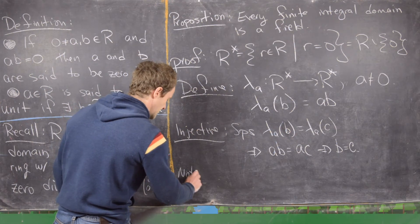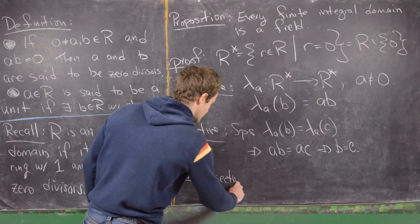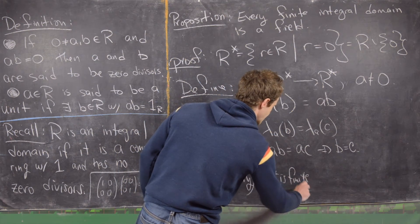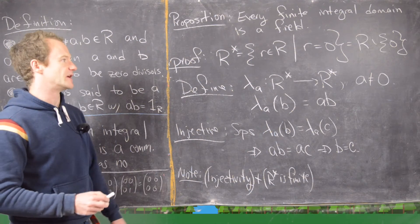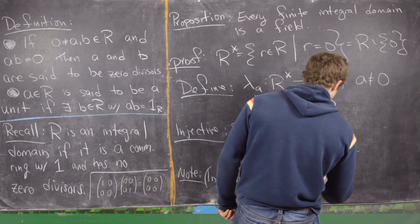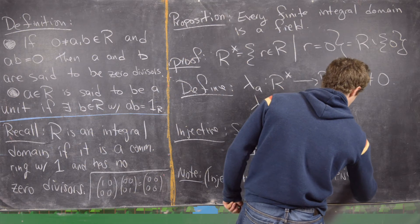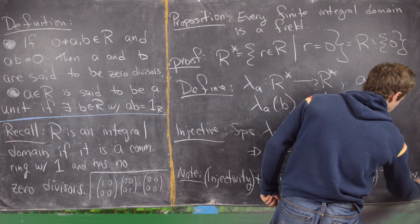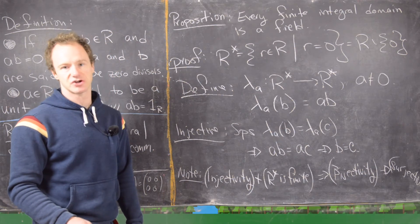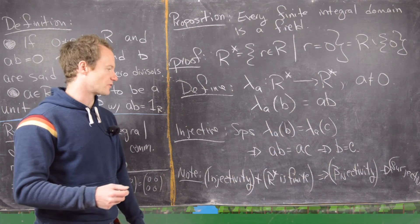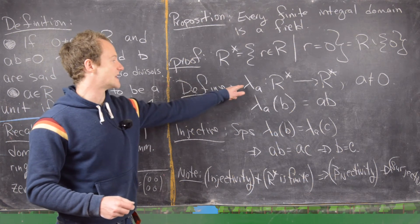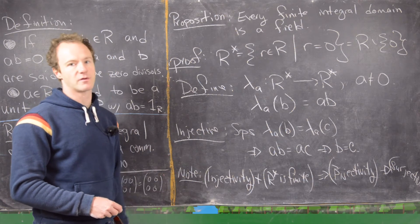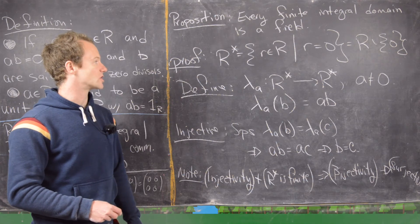Now notice that injectivity plus the fact that R* is finite — since the entire integral domain is finite, removing the zero element keeps it finite — implies bijectivity. This is a standard result about set-theoretic functions: an injective map from a finite set to itself is bijective. So left multiplication by A is a surjective function.